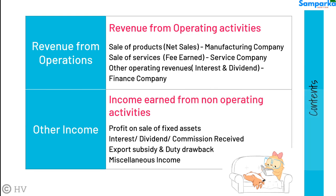Other income indicates income earned from non-operating activities. It may include profit on sale of fixed assets, interest, dividend, commission received, export subsidy and duty drawback, and miscellaneous income.